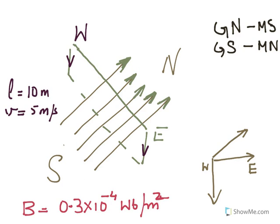In this question, there is a horizontal straight wire 10 meters long extending from east to west. This is our north, south, east to west.